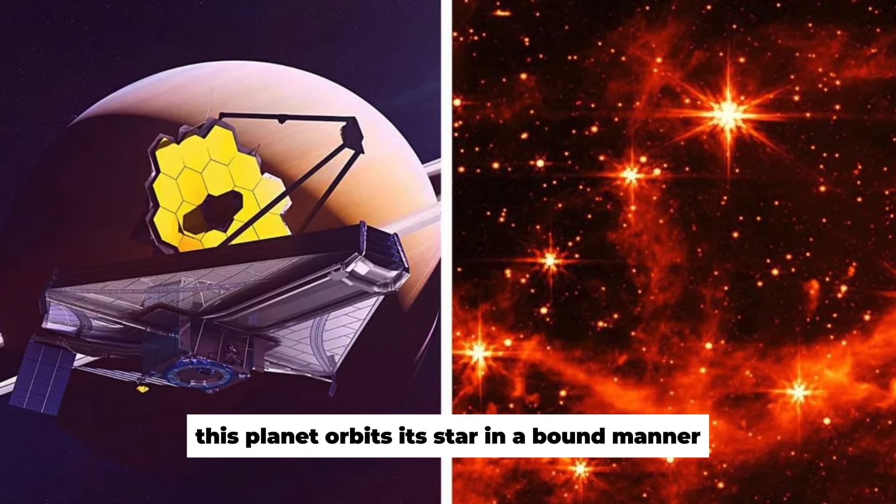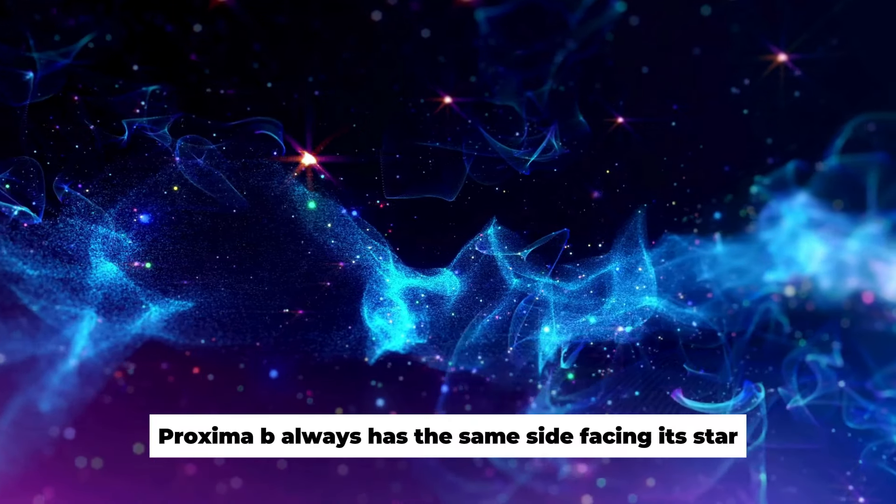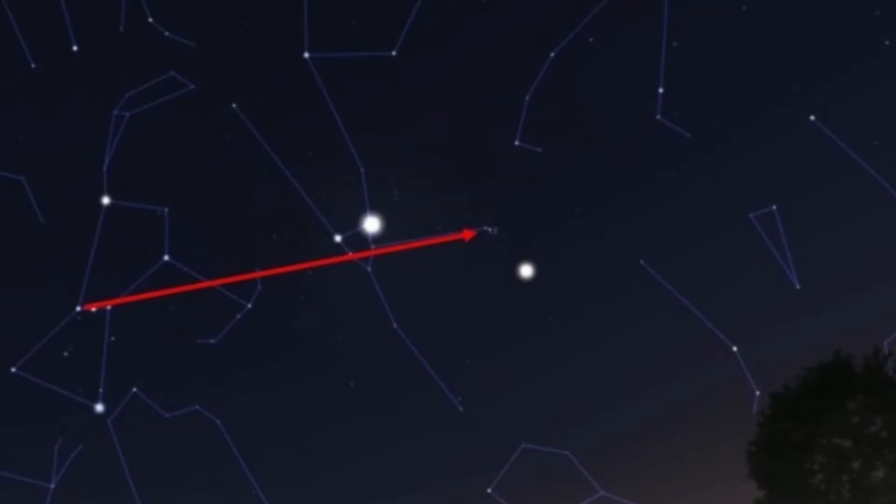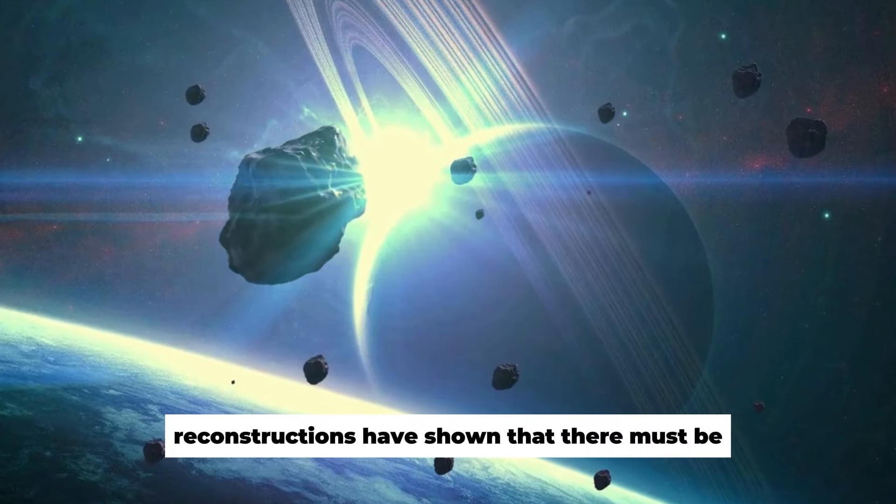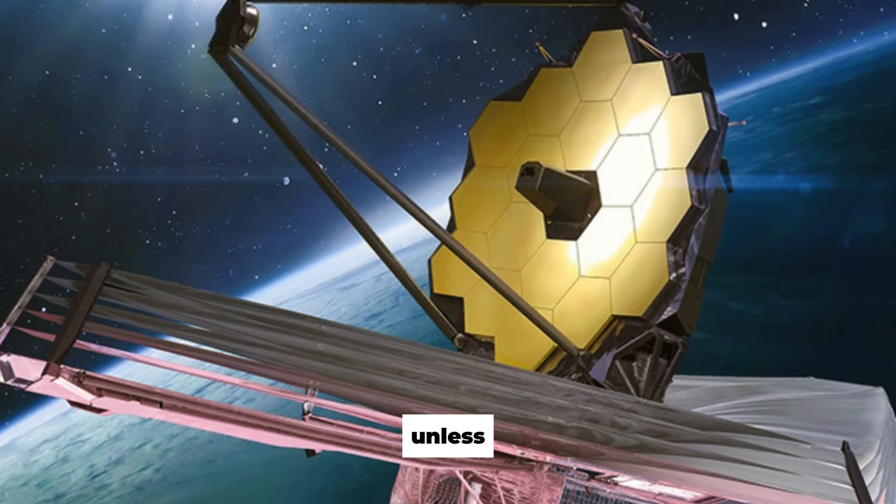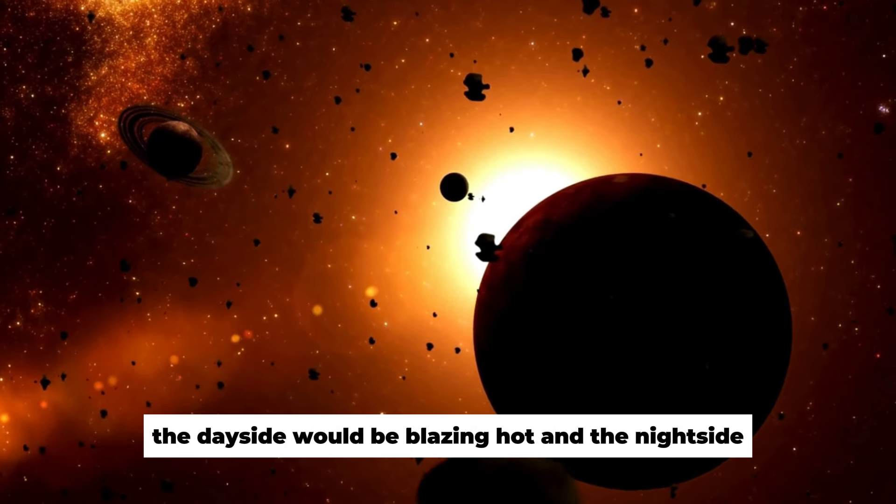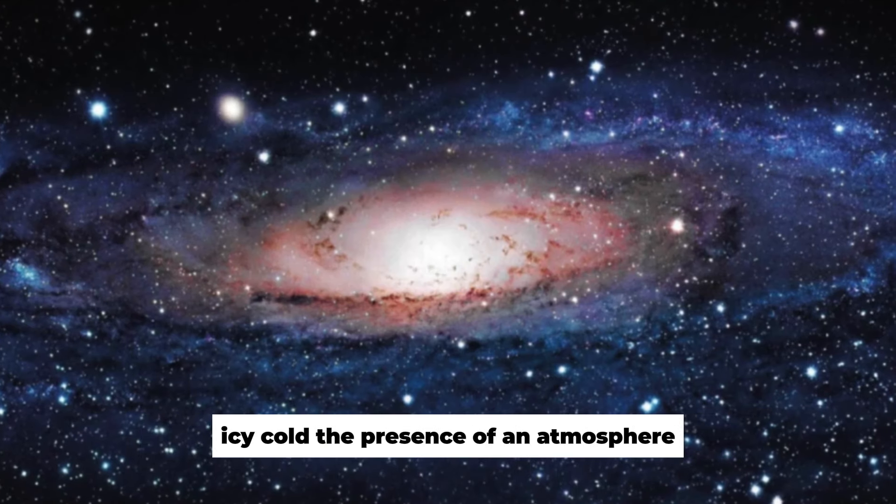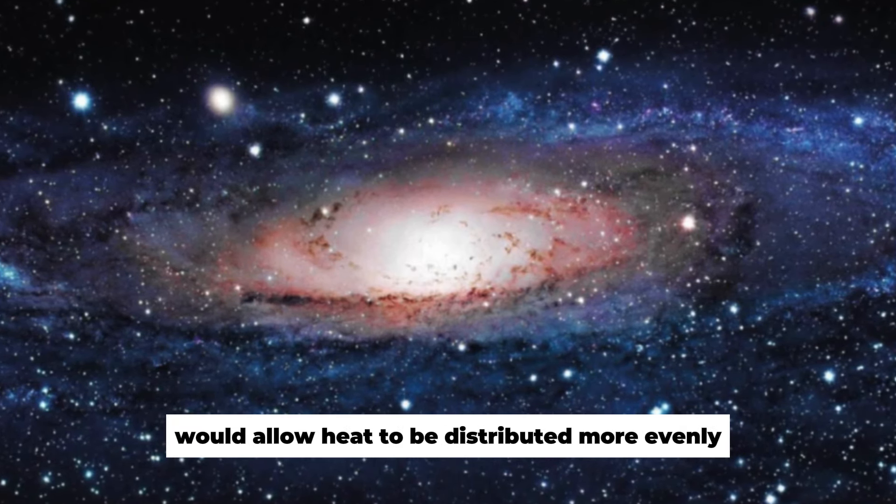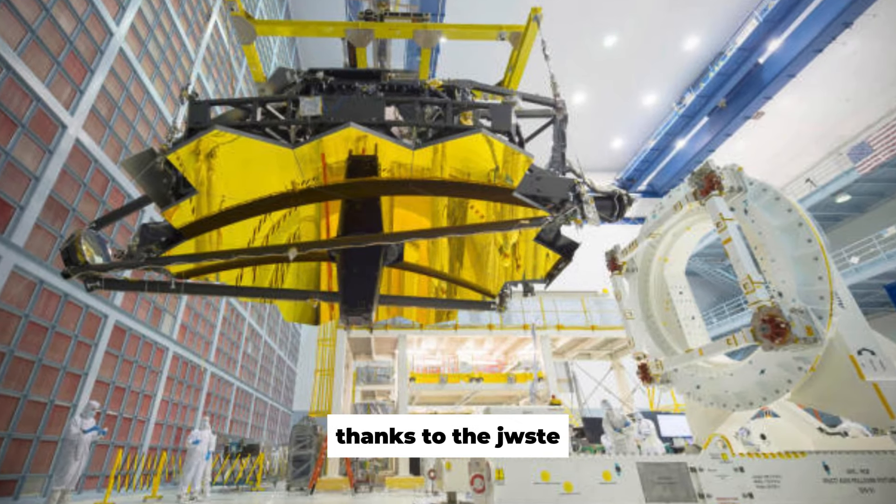This planet orbits its star in a bound manner, just as our Moon orbits us. Proxima b always has the same side facing its star, and one side is always in shadow. Reconstructions have shown that there must be extreme temperature differences between the day and night sides of Proxima b. Unless the planet has an atmosphere that redistributes heat, without an atmosphere, the day side would be blazing hot and the night side icy cold. The presence of an atmosphere, on the other hand, would allow heat to be distributed more evenly. And this is exactly what we can now find out thanks to the JWST.